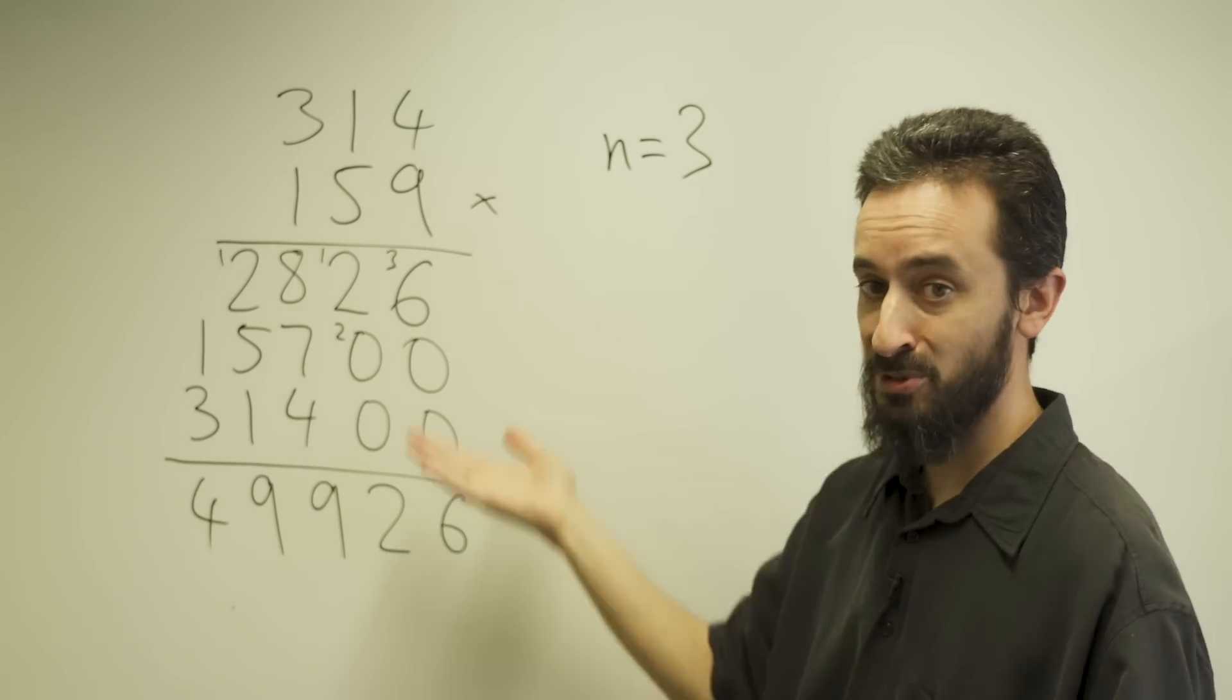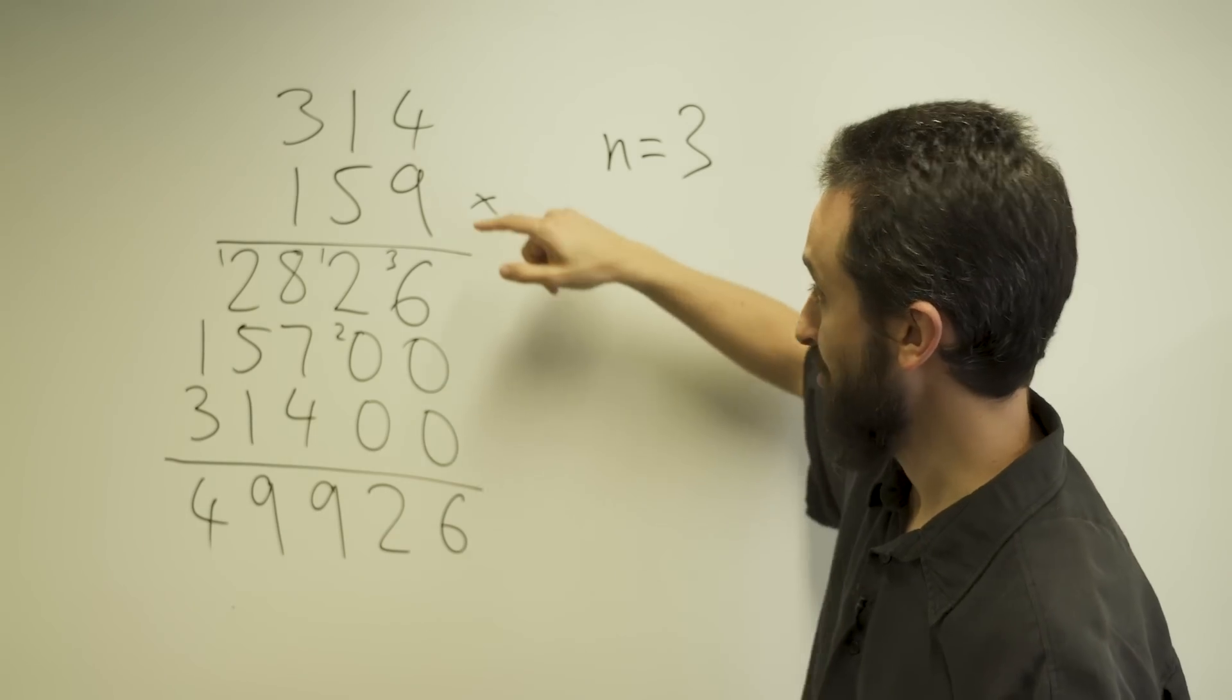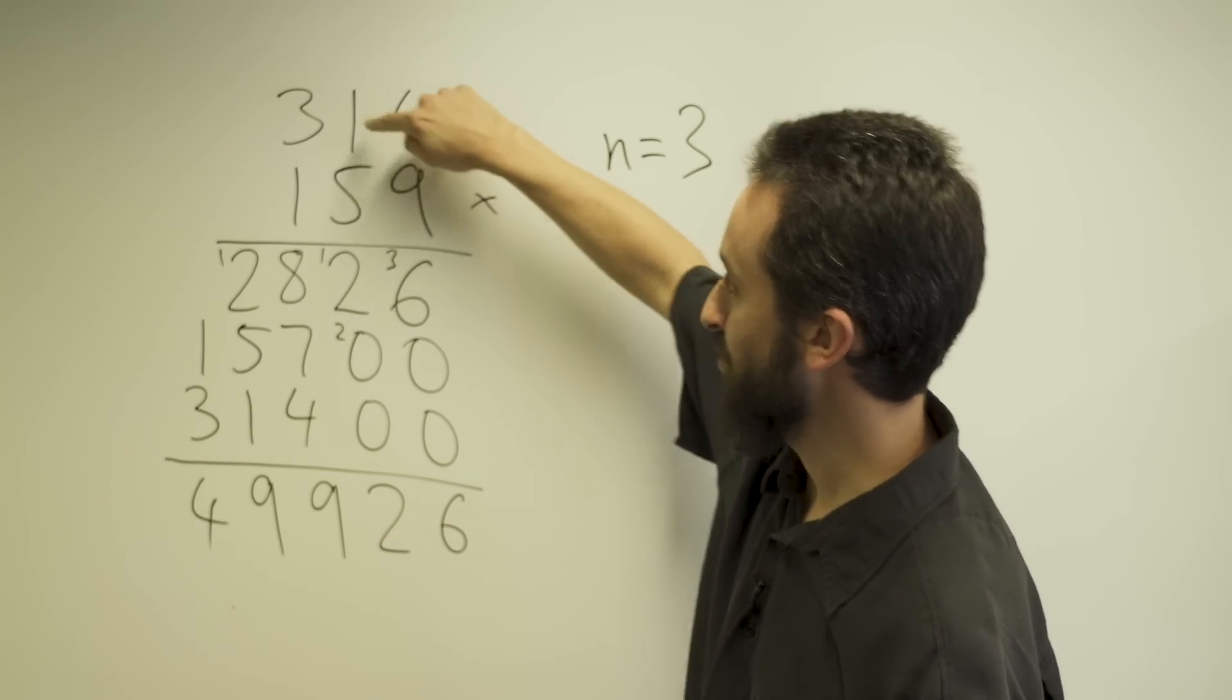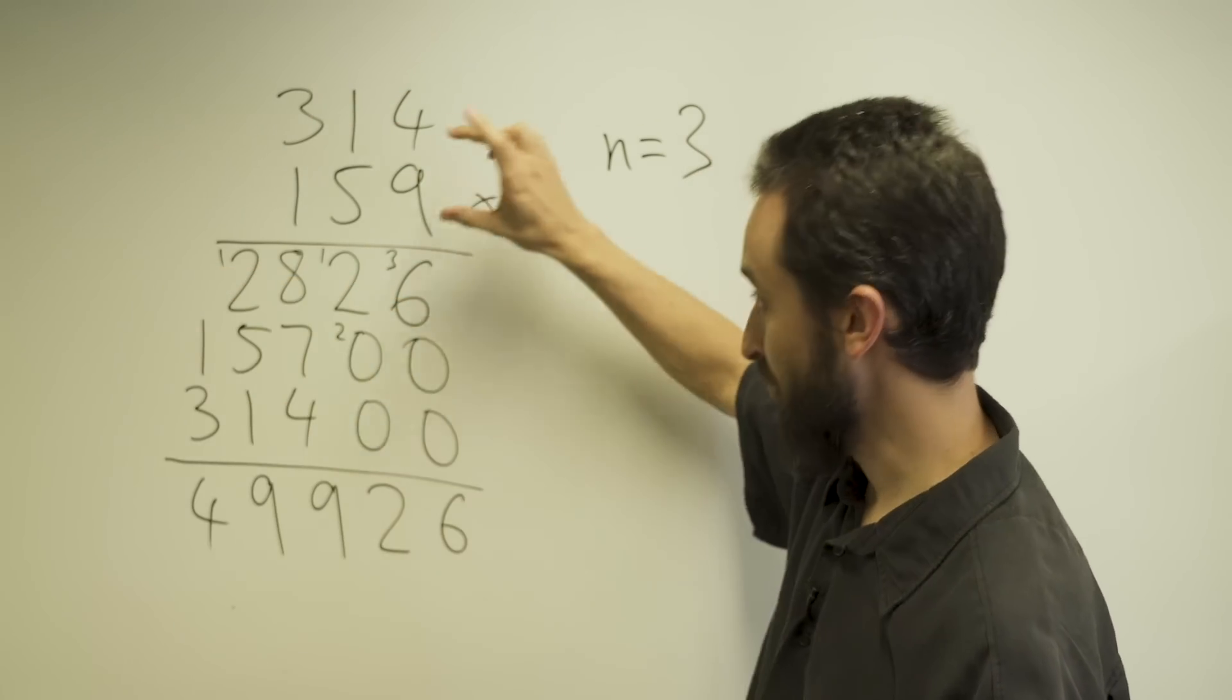So you can see to do this multiplication, if I do this the way that we learn at school, I have to start off by multiplying 9 times 4 and then 9 times 1 and then 9 times 3, and I write the answer here in the first line. So that I've dealt with the first digit.